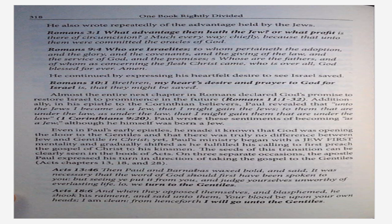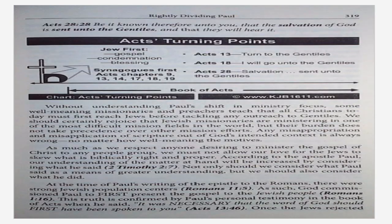The seeds of this transition can be clearly seen in the book of Acts. On three separate occasions, the apostle Paul expressed his turn in direction of taking the gospel to the Gentiles — Acts chapter 13 and 18 and 28. Acts 13:46 — Then Paul and Barnabas waxed bold and said, It was necessary that the word of God should first have been spoken to you, but seeing ye put it from you and judge yourselves unworthy of everlasting life, lo, we turn to the Gentiles. Acts 18:6 — And when they opposed themselves and blasphemed, he shook his raiment and said unto them, Your blood be upon your own heads. I am clean. From henceforth I will go unto the Gentiles. Acts 28:28 — Be it known therefore unto you that the salvation of God is sent unto the Gentiles and that they will hear it.